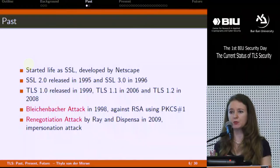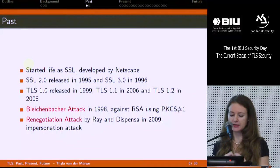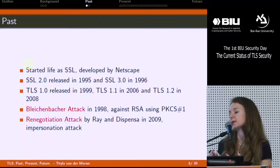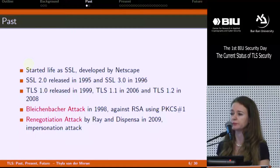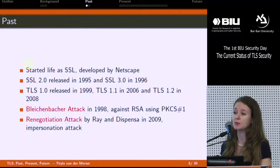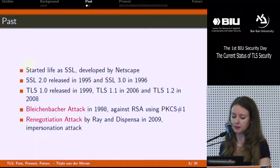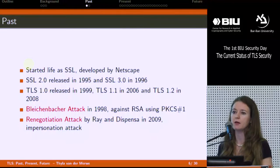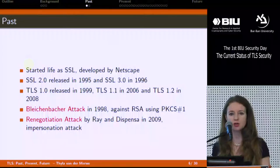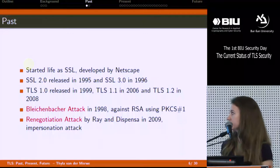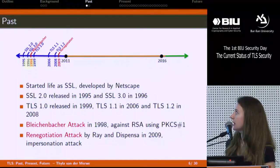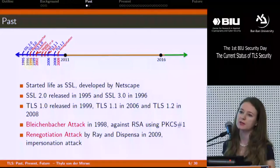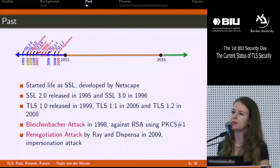In this era, I'll highlight two attacks. In 1998, we had the Bleichenbacher attack against RSA when PKCS#1 encoding was used for encryption — SSL version 3 was susceptible to this plaintext recovery attack. Then in 2009, Ray and Dispenser published the renegotiation attack, which exploited a particular type of TLS handshake known as the renegotiation handshake. There was also other work and analyses that I haven't fully touched on.